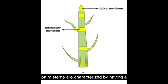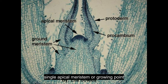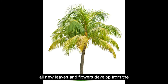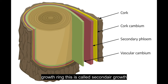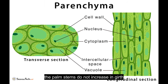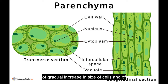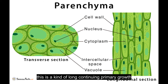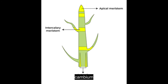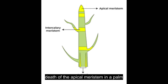Palm stems are characterised by having a single apical meristem or growing point, which is also referred to as the bud or heart. All new leaves and flowers develop from the apical meristem. A dicot tree produces phloem and xylem internally with a cambium, a growth ring — this is called secondary growth. The palm stems do not increase in girth due to any cambial activity, but this thickening is the result of gradual increase in size of cells and of intercellular spaces. This is a kind of long continuing primary growth. Palms have no lateral meristems or vascular cambium. Death of the apical meristem in a palm results in the death of that stem and the death of the entire palm.